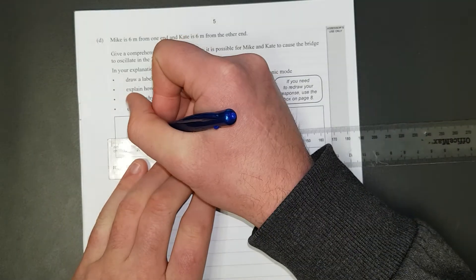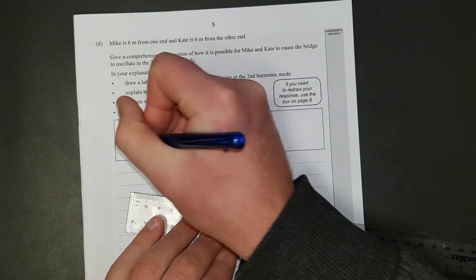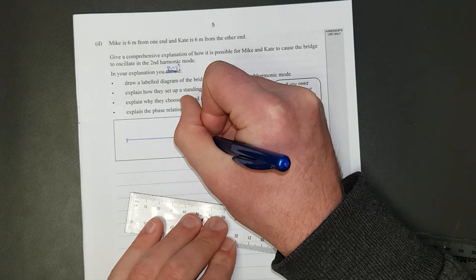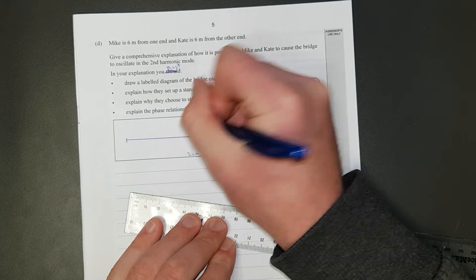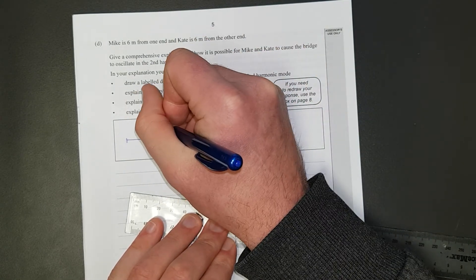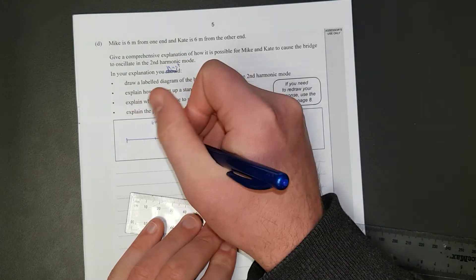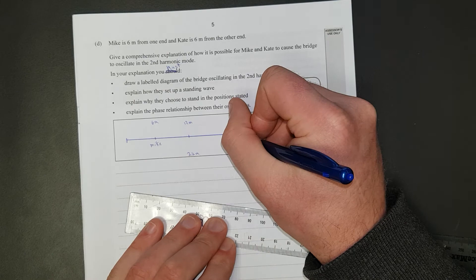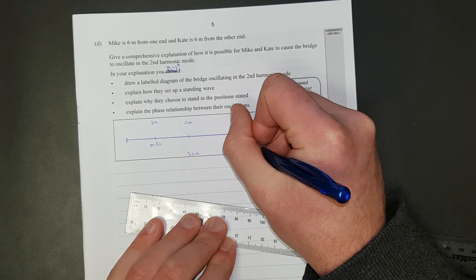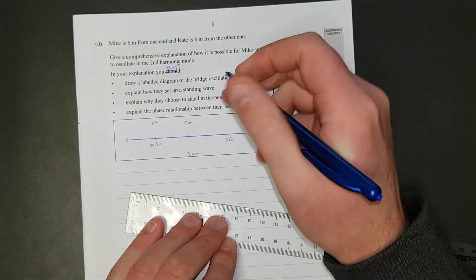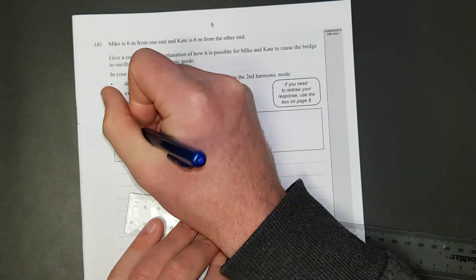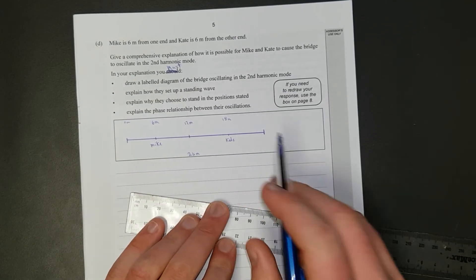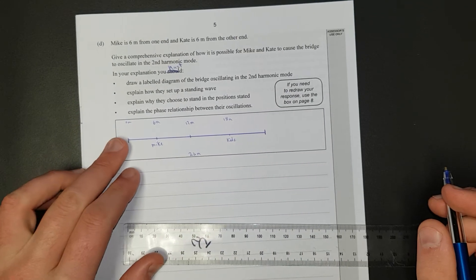Let's get our ruler and draw up our trusty diagram slash bridge. That's one end, that's the other. We'll put down here 24 meters because that's the length of the bridge. Here is 12 meters smack bang in the middle. Here's 6 meters. Mike can stand here because he's standing 6 meters. And Kate can stand over here. This is 18 meters. This is 0 meters because we'll just make that our origin. We'll go out from there, whatever.